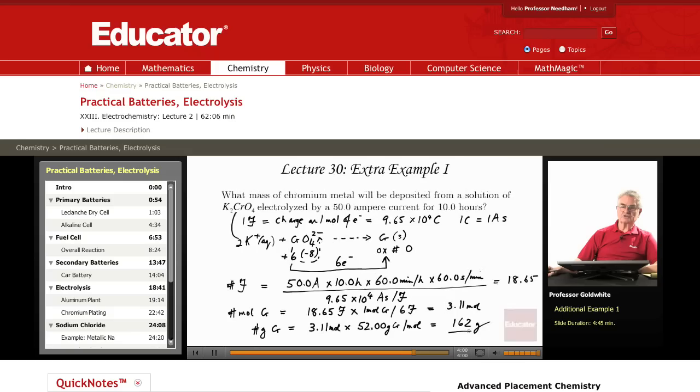Even for this substantial current passing for most of a day, 10 hours, we are only getting about 3 moles of chromium. Nevertheless, if we are doing chromium plating, 3 moles of chromium will go a long way.